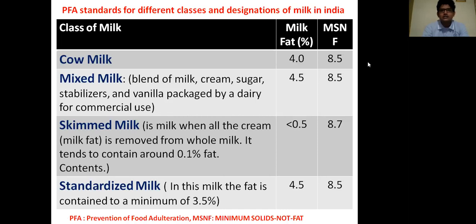Depending on these constituents, there are different classes of milk. The first class of milk is cow milk. Cow milk contains 4% milk fat and 8.5% MSNF.